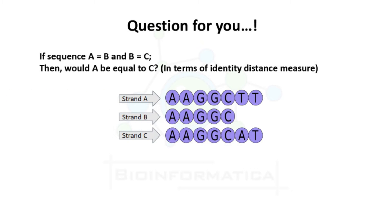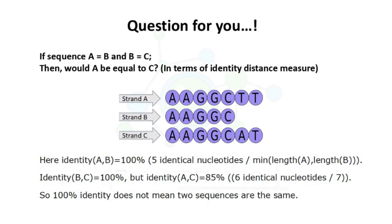Let's see the answer. Let strand A be AAGGCTT, strand B be AAGGC, and strand C be AAGGCAT. Both strand A and B show 100% identity — 5 identical nucleotides divided by the minimum length of A or B, which is 5, gives 100% identity. Strand B and C also show 100% identity. But when we talk about A and C, the identity is 85%, because there are 6 identical nucleotides divided by 7, the minimum length of A or C. So 100% identity does not mean two sequences are exactly the same.